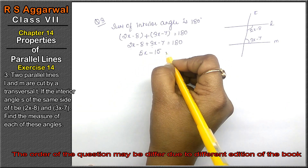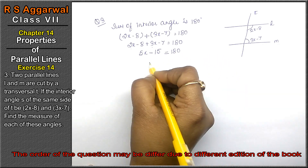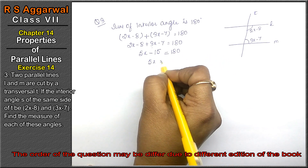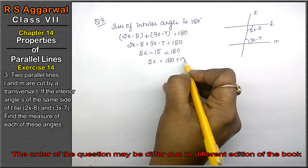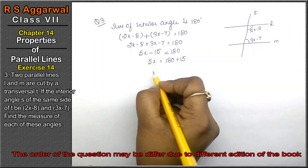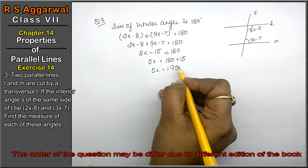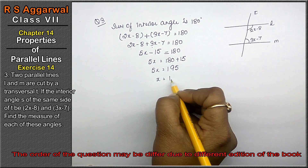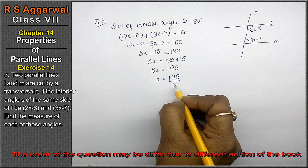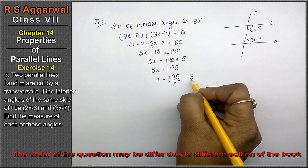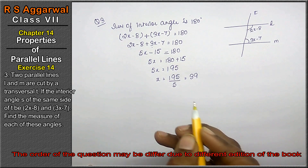So we have 5x - 15 = 180. Moving -15 to the other side gives us 5x = 180 + 15 = 195. Therefore x = 195 ÷ 5 = 39.